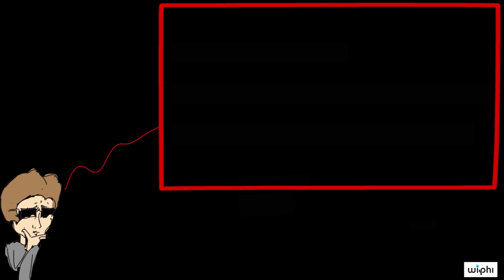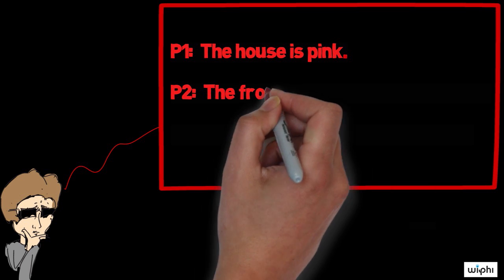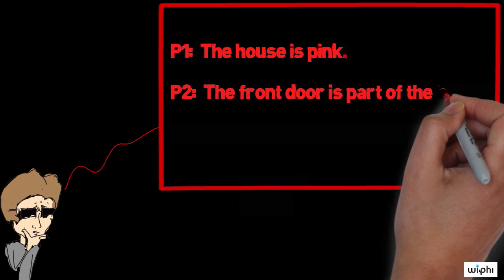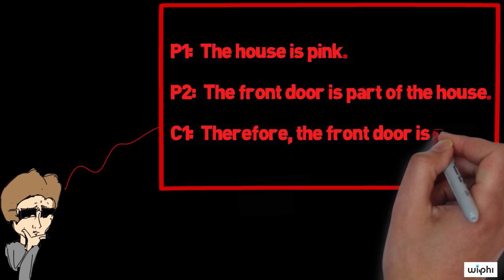I, for instance, might argue the following. Premise one: the house is pink. Premise two: the front door is part of the house. Conclusion: Therefore, the front door is also pink.